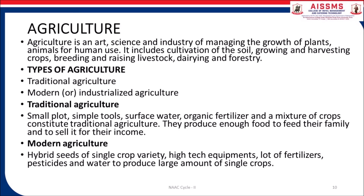Traditional agriculture uses small plots, simple tools, surface water, organic fertilizer and a mixture of crops. They produce enough food to feed their family and to sell it for their income. Modern agriculture uses hybrid seeds of a single crop variety, high-tech equipment, lot of fertilizers, pesticides and water to produce large amounts of single crops.